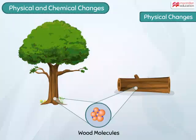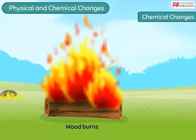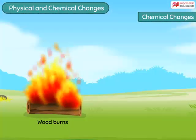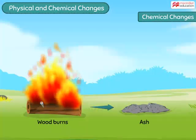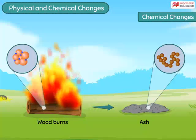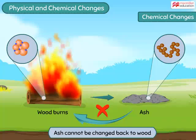Now look at this log of wood — even after being cut from the tree, the wood remained the same. But what happens when this log of wood is set on fire? Upon burning, the wood changes into ash. Ash is a new substance which has different chemical properties than wood and it cannot be changed back into wood again.